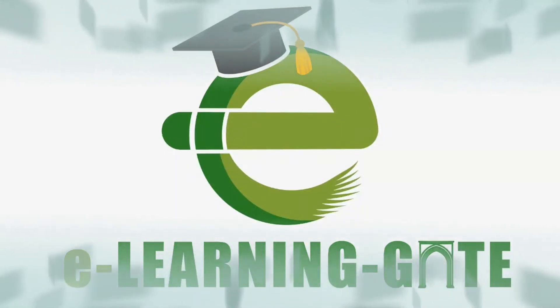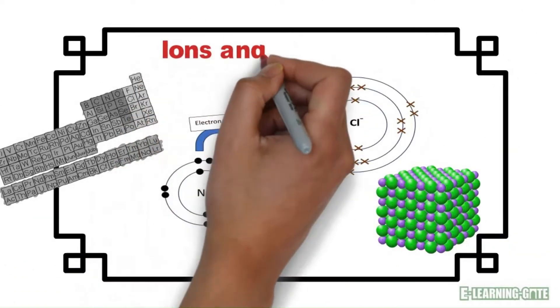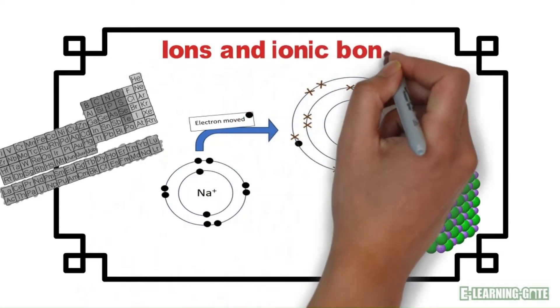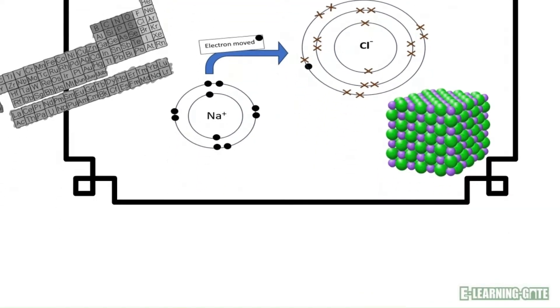E-Learning Gate opens the cognitive learning paths with the help of digital resources. Today, we'll explore how atoms transform into charged particles, which means ions, and combine to create amazing ionic compounds.